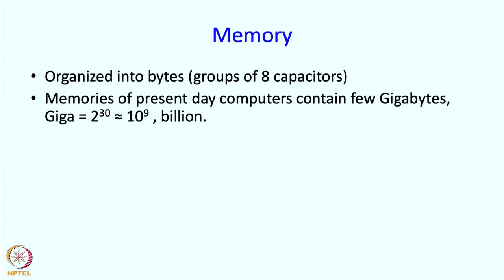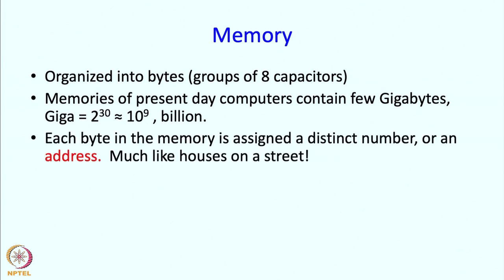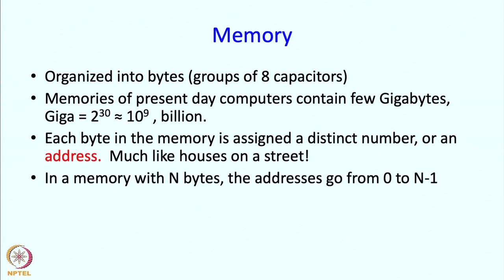Let me talk a little bit about the memory. Typically memory is organized into bytes, so groups of 8 capacitors. Modern memories will contain a few gigabytes, where giga represents 2 raised to 30, or about 10 raised to 9, or about a billion. So a gigabyte is a billion bytes. Each byte in the memory is assigned a distinct number or a distinct address. In a memory with n bytes, the addresses go from 0 to n-1.